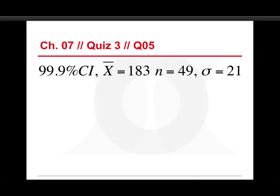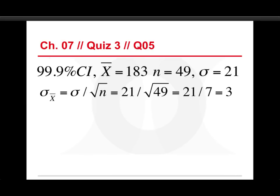Again, write down the parameters: 99.9% confidence interval, sample mean of 183, that's the X bar, and our sample size of 49, and the standard deviation sigma for the population of 21. Get the standard error. You take the standard deviation of 21 divided by the square root of N, which is 49. That gives you 21 over 7. So the standard error is 3 points.